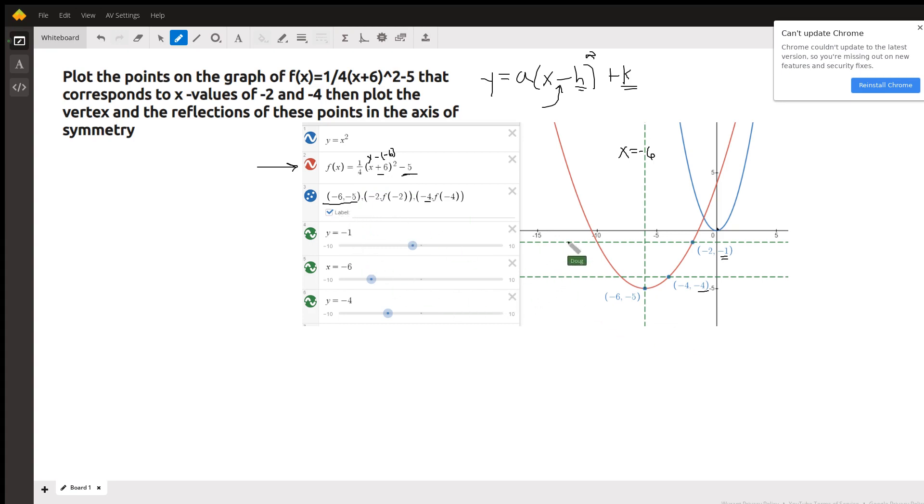Now what do they mean by the reflection in the axis of symmetry? This line, x equals negative six, that is the axis of symmetry. It's the vertical line that passes through the vertex. And the reflection across that line,